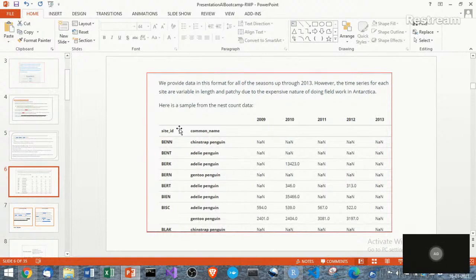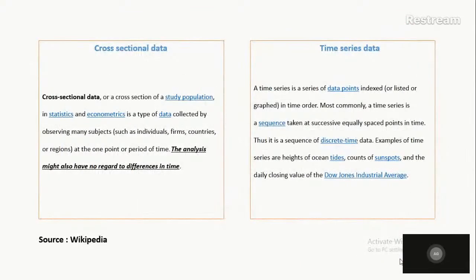This is a time series problem because the data has a time sequence to it. Other types of data are cross-sectional — collected at one point in time, like transaction data for credit card fraud detection. This data is a time series, and we have to understand what type of data we have before jumping into algorithms.